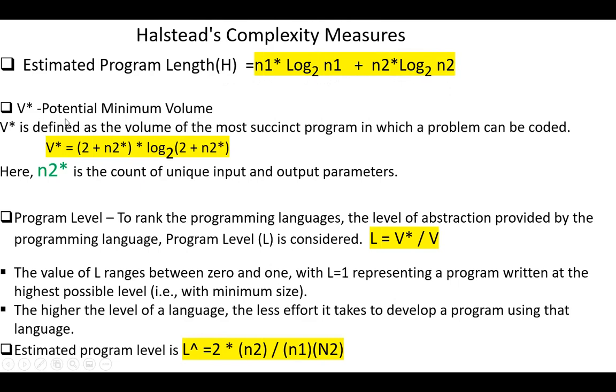V star, potential minimum volume. V star equals 2 plus n2 star multiplied by log to the base 2, 2 plus n2 star. Here, n2 star is the count of unique input and output parameters.